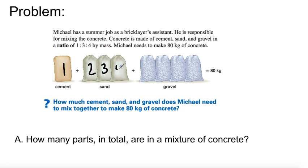three, four, five, six, seven, eight. So we have eight equal parts to make 80 kilograms of concrete. So how many parts? We have eight parts.